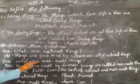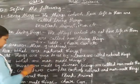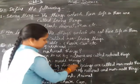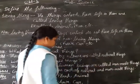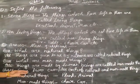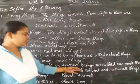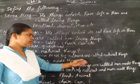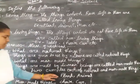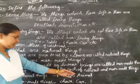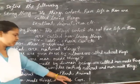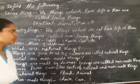What are man-made things? Things made by human beings are called man-made things. Give two examples each of natural and man-made things. Natural things: plants and animals. Man-made things: chair and car.